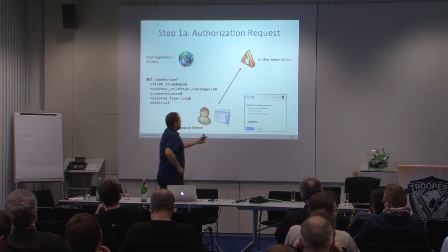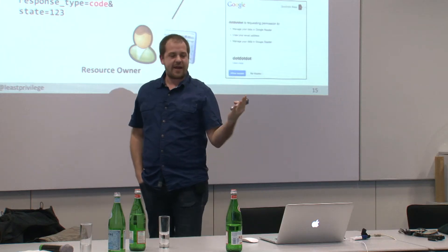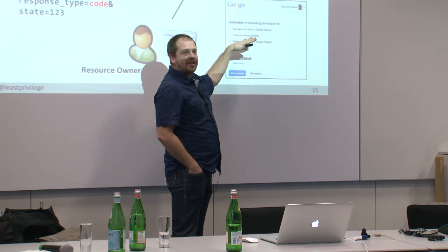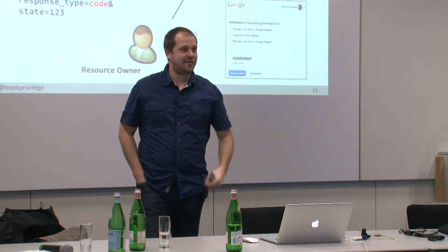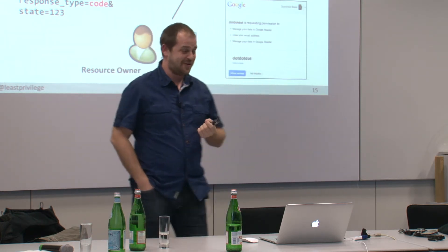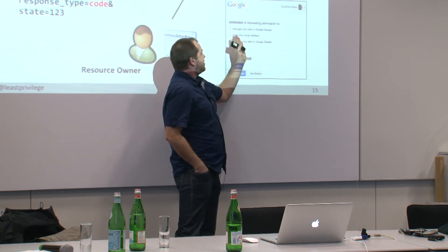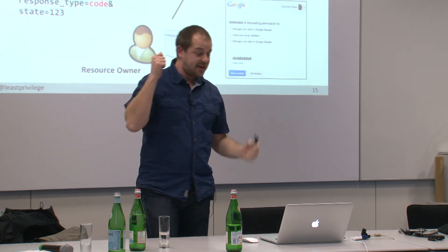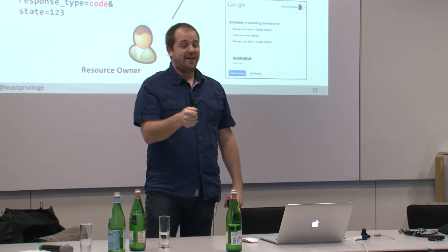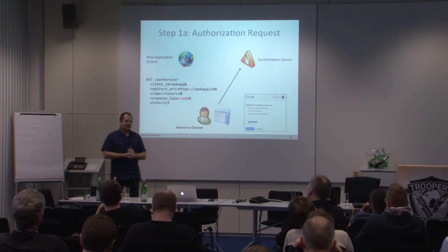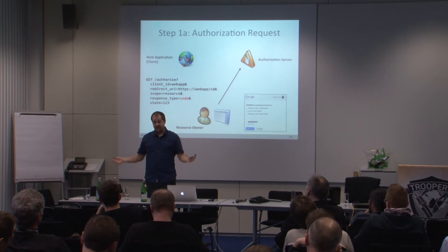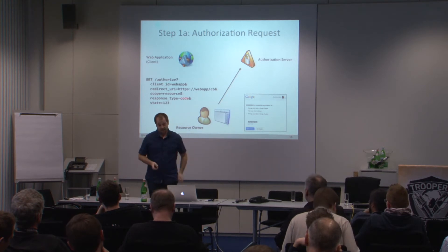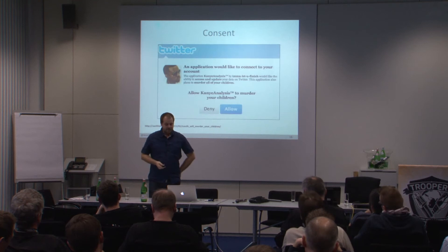What you see next is the consent dialogue, saying something like: this application wants access to your Google Reader data. If you press OK, that access is granted. OAuth can't save your grandma on the internet — if you press OK here, you are in the game. A Photoshopped fake Twitter consent screen was shown as an example of how dangerous blind clicking can be.